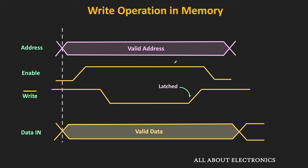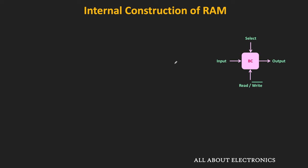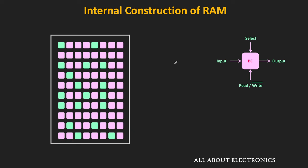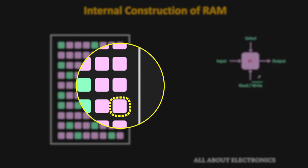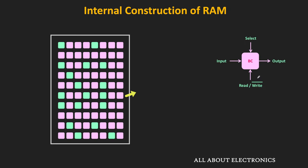Now let us see the logic circuit which can actually perform these read and write operations in the memory. The memory is a collection of storage cells, often referred to as binary cells, and each binary cell stores one bit of information. To understand the internal construction of the RAM, we will look at the logic circuit of one binary cell, which will be represented as a small block in further discussion.